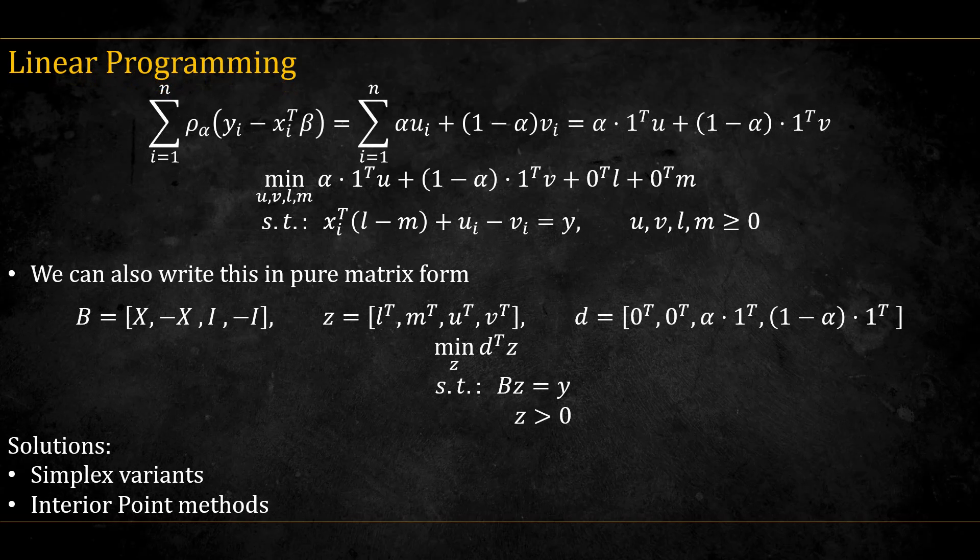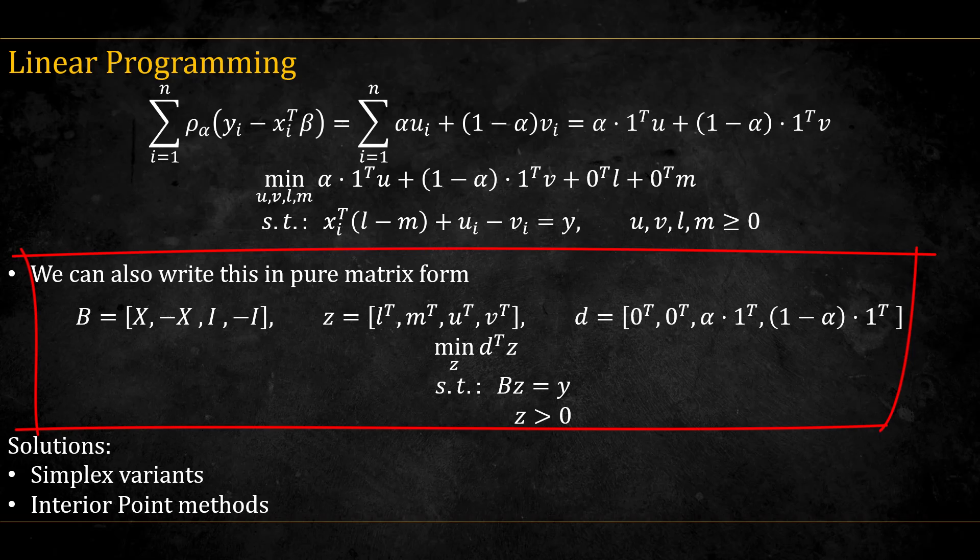We can also write this in matrix form, like this, where B is a matrix that has submatrices x, minus x, i, the identity, and minus i, concatenated across its columns. You can pause the video and verify that this matrix notation is equivalent to the algebraic notation above. Now that we are in linear programming form, we can use standard linear programming algorithms, such as variants of the simplex methods or the interior point methods, to find solutions. I won't get into these algorithms, as there's plenty of material about them online.